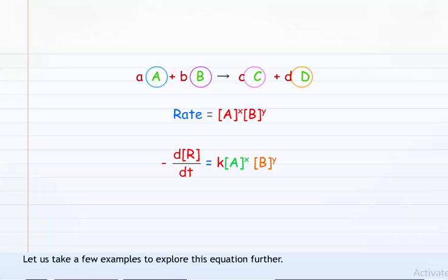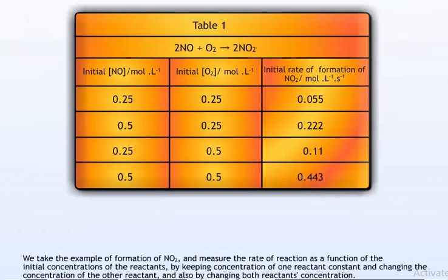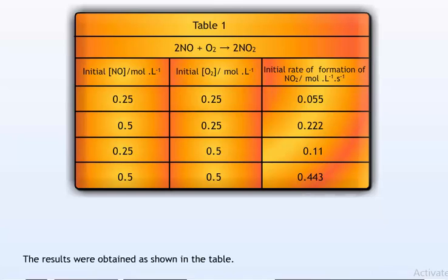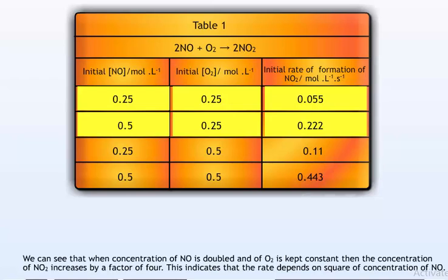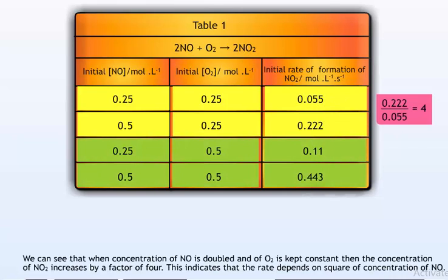Let us take the example of formation of NO2 and measure the rate of reaction as a function of the initial concentrations of the reactants, nitric oxide and oxygen. By keeping the concentration of one reactant constant and changing the other, the results were obtained as shown in the table. When concentration of NO is doubled and O2 is kept constant, the concentration of NO2 increases by a factor of 4.